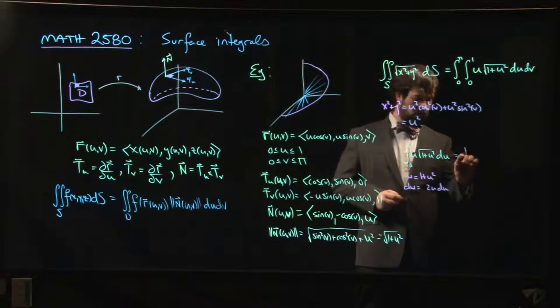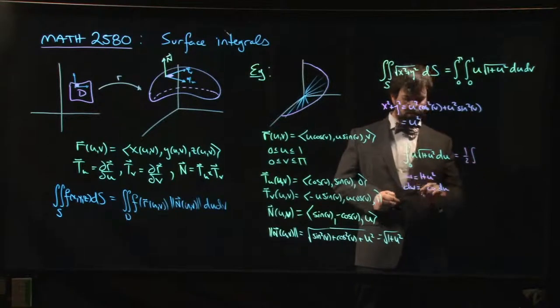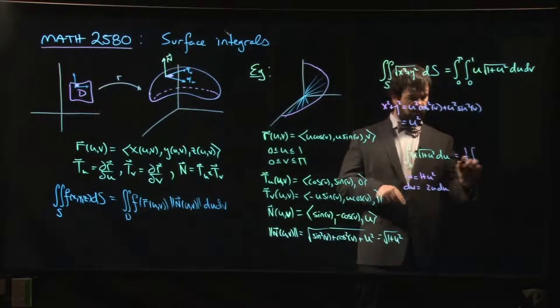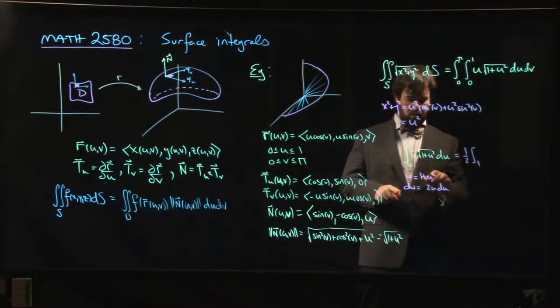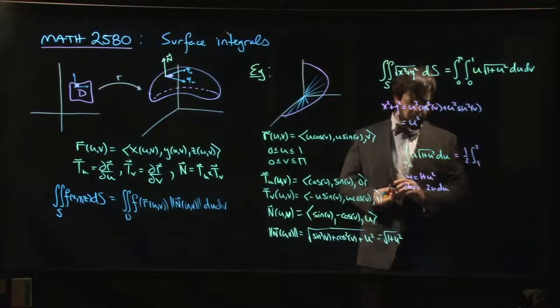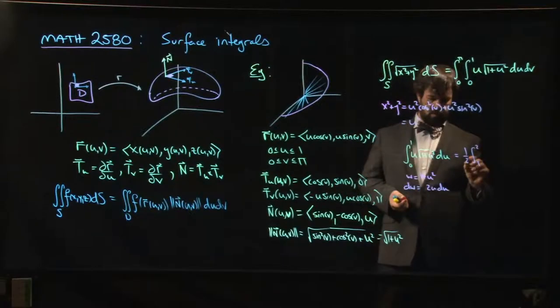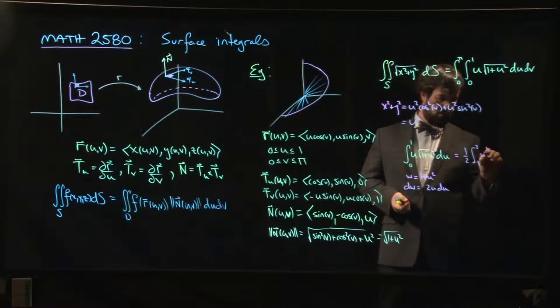So this is going to be 1 half the integral. Let's see. When u is equal to 0, w is 1. When u is equal to 1, w is 2. And then it's just w to the 1 half, dw.